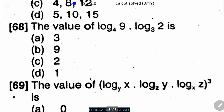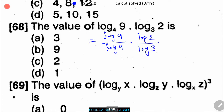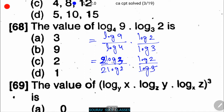The options are 3, 9, 2, and 1. The solution: log₄9 · log₃2 can be written as (log 9 / log 4) · (log 2 / log 3). Now, log 9 = log 3² = 2 log 3, and log 4 = log 2² = 2 log 2. So the expression becomes (2 log 3 / 2 log 2) · (log 2 / log 3) = 1. So the right answer is option D, which equals 1.